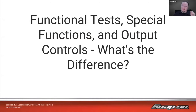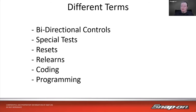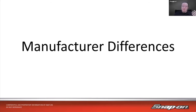Our topic today is functional tests, special functions, and output controls — what's the difference? If we think about all the different functions we can do on a vehicle with a scan tool now, they're called all sorts of different things. They can all be lumped into this one category of functional tests. But you may have heard them called bi-directional controls, special tests, resets, relearns, coding, even programming. We're going to talk through all these different terms, and there are some differences between them. Also, manufacturer to manufacturer, there may be differences in what they're called and where they appear on the scan tool.